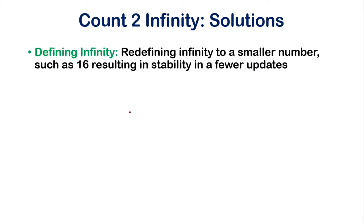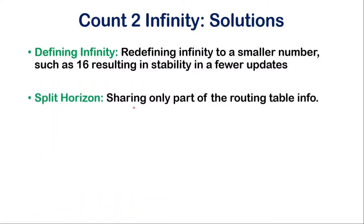Now let us look at some solutions. The first and simplest solution is to redefine infinity to a smaller number, such as 16. For our previous scenario, the system will stabilize in fewer updates. In fact, most implementations of the distance vector protocol define 16 as infinity.